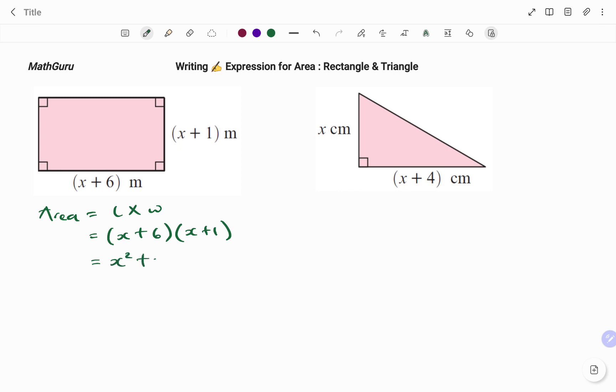6 times x is 6x, then 6 times 1, that's 6. And if I rewrite by simplifying, I have x squared, x plus 6x that's 7x, plus 6. Don't forget to put your unit, that's square meters.